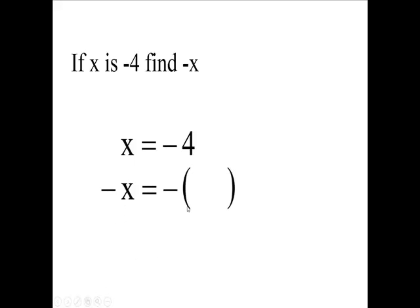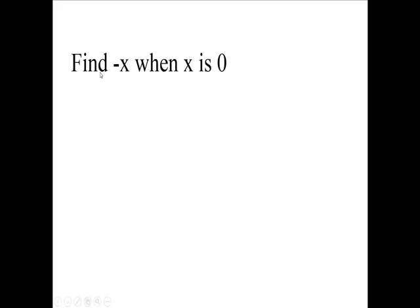We have the opposite of x, where x is in parentheses. I haven't changed anything except put parentheses in for x. We're saying the opposite of x, where x is this number here, so this number goes in there. Now, how many negatives do I have here? One, two. Two negatives make a positive, so the opposite of x here is positive 4.